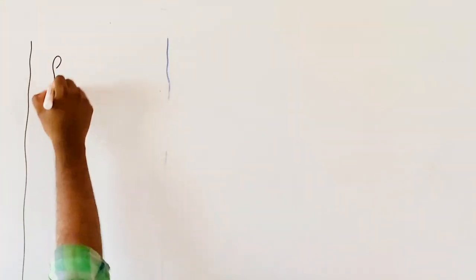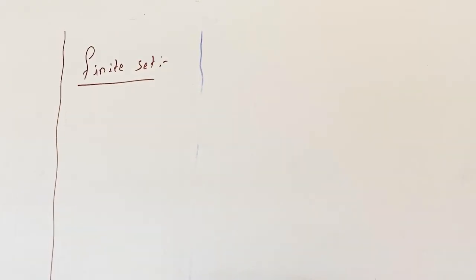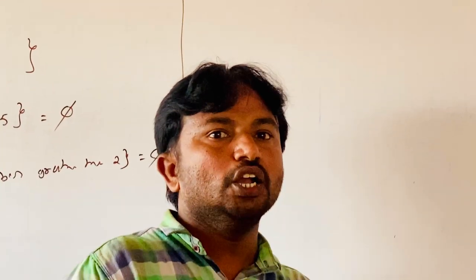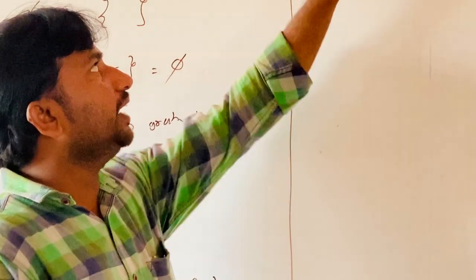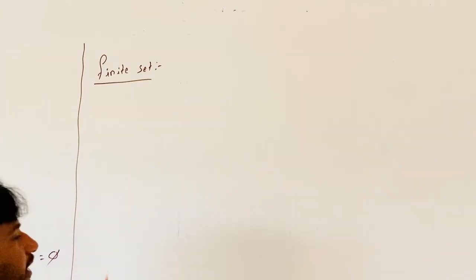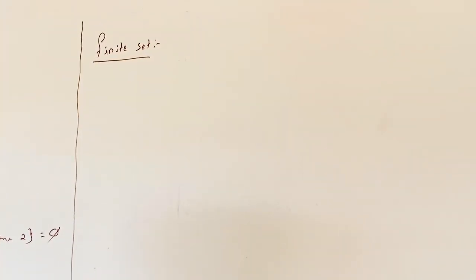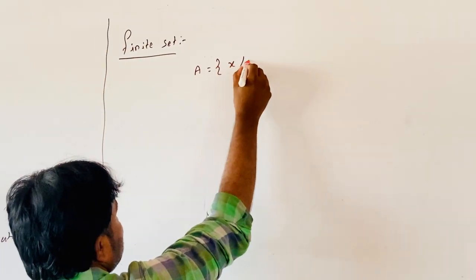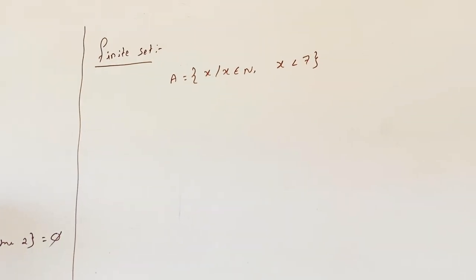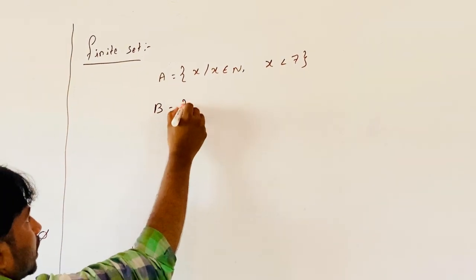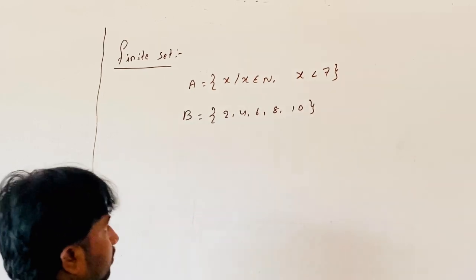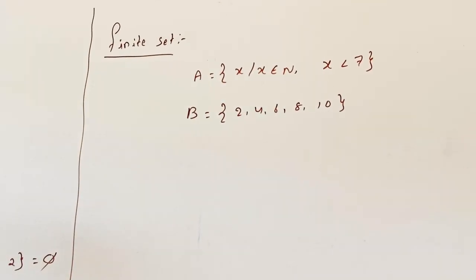The third type is a finite set. A set in which the process of counting the elements comes to an end is called a finite set — meaning it contains countable numbers. For example, set A equals {x such that x belongs to N, x less than 7}, and set B equals {2, 4, 6, 8, 10}. Both are finite sets with countable elements.